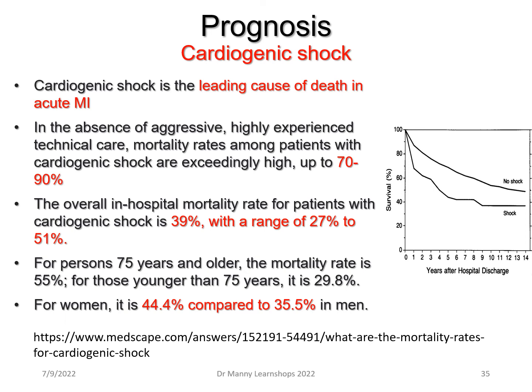What about the prognosis? Cardiogenic shock is one of the leading causes of death related to acute myocardial infarction. In the absence of aggressive, highly experienced medical, nursing, and technical care, mortality rates among patients in cardiogenic shock exceed 70% and can be as high as 90%. The overall in-hospital mortality rate is around 39%, ranging from 27 to 51%. For persons elderly — more than 75 years of age — the mortality rate is 55% or higher. In those younger than 75, it is 29.8%. For women, mortality is higher at 44.4%, compared to men at 35.5%.